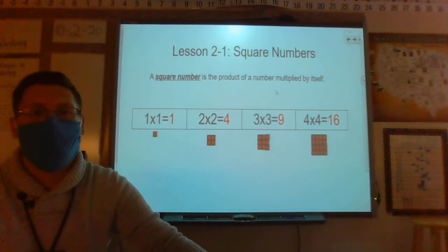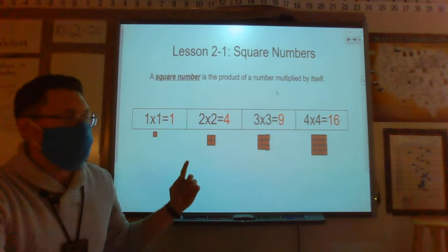A square number is any number that is the product of a number multiplied by itself. As I look at my examples right here,